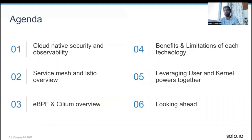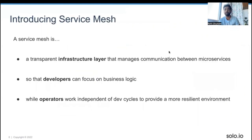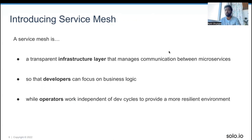Introducing Service Mesh: Service Mesh is a transparent layer that manages the communication between your microservices. Why use Service Mesh? To increase security, visibility, and reliability. If you have a large number of microservices in your infrastructure, then Service Mesh is something for you. Previously, when services communicated with each other it was really tough because you couldn't implement business logic into it.